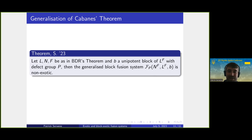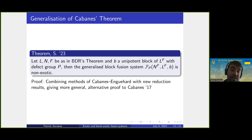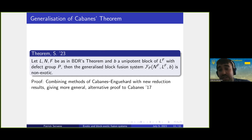About the proof: I proved some new reduction results and used methods Cabanes developed with Enguehard in the 90s, but I did not directly use Cabanes's result itself — I have a more general alternative proof of his results. I had to leave out many details to avoid speaking too long, but I am happy to discuss further. Thank you.